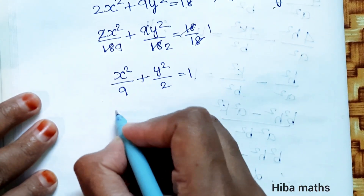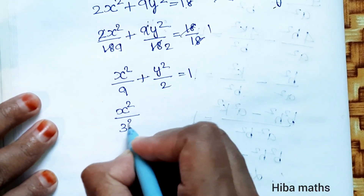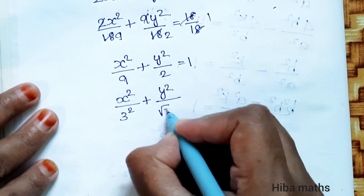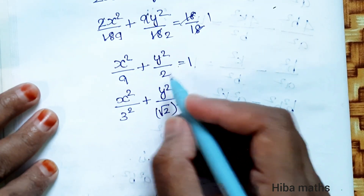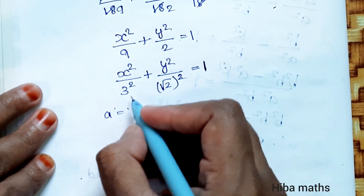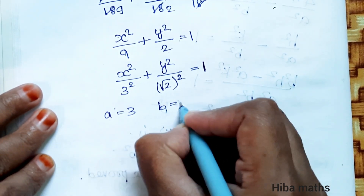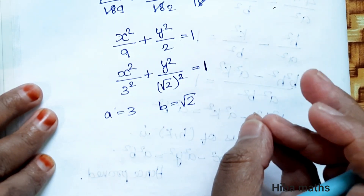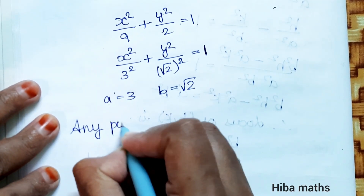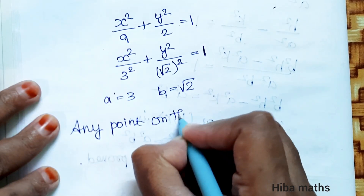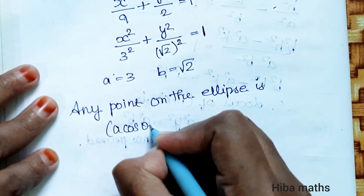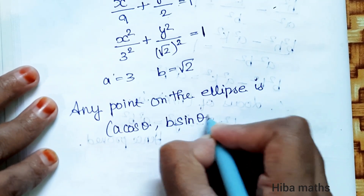So we have the ellipse in standard form x²/9 + y²/2 = 1, where a² = 9 so a = 3, and b² = 2 so b = √2. The parametric form of the ellipse is (a cos θ, b sin θ), which gives Q = (3 cos θ, √2 sin θ).